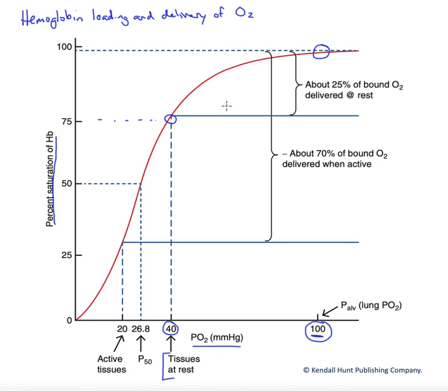So we have this big, what's called the venous O2 reserve, because it's the oxygen attached to hemoglobin that ends up back in the systemic veins. It was not delivered. So it's a nice reserve for when activity level rises and we need more oxygen.